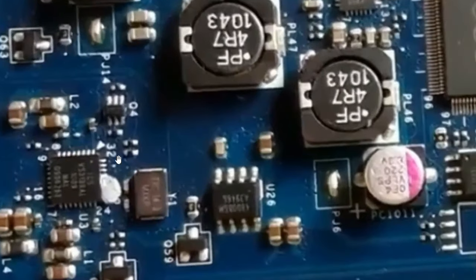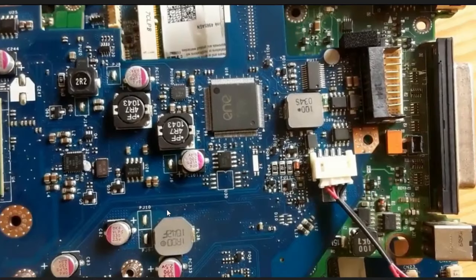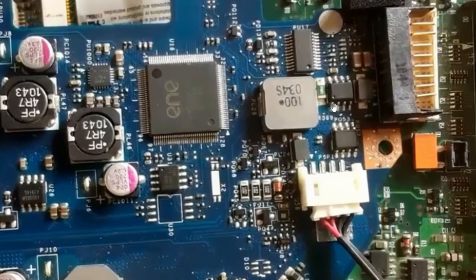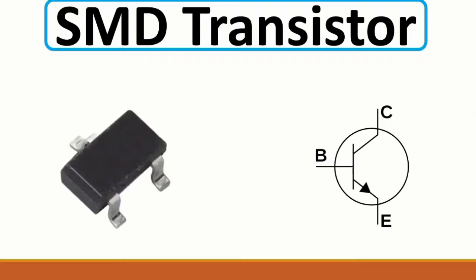Here we have 'U2' - that means this is an IC. Here we have two MOSFETs. This dot marks pin number one. So we have pins one, two, three: source, gate, and drain.